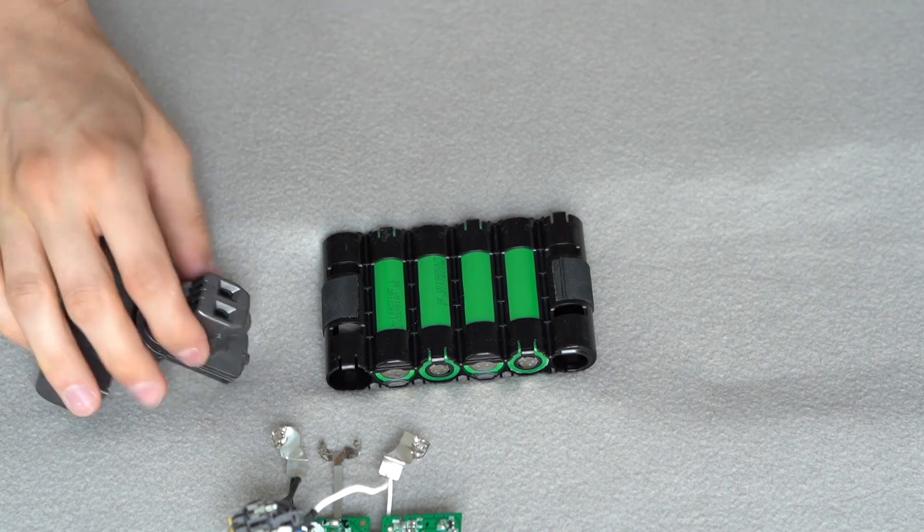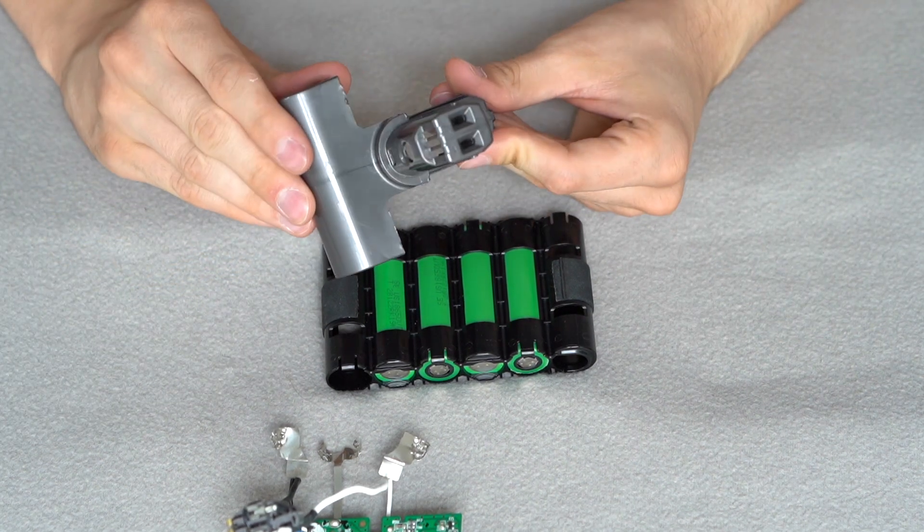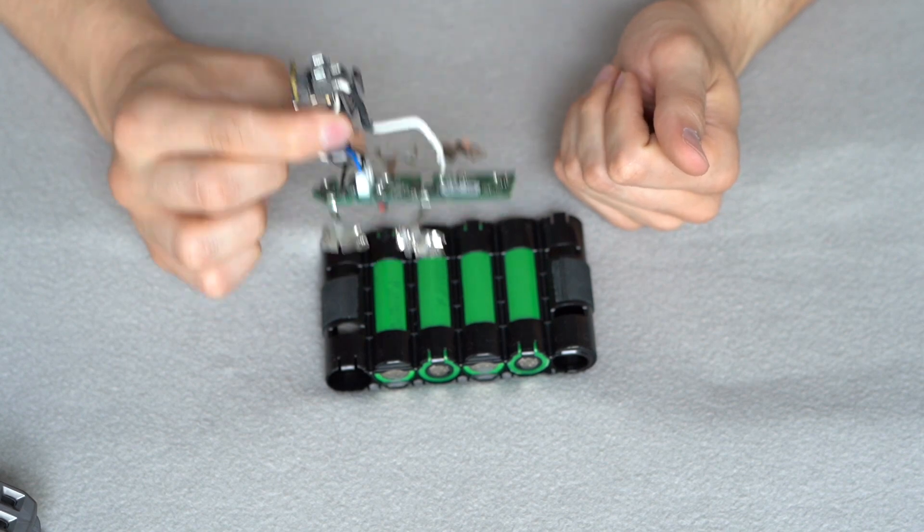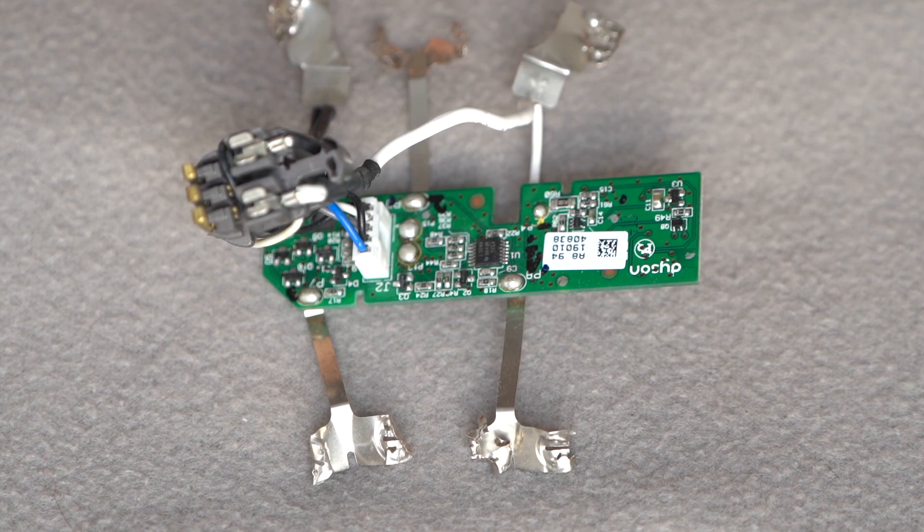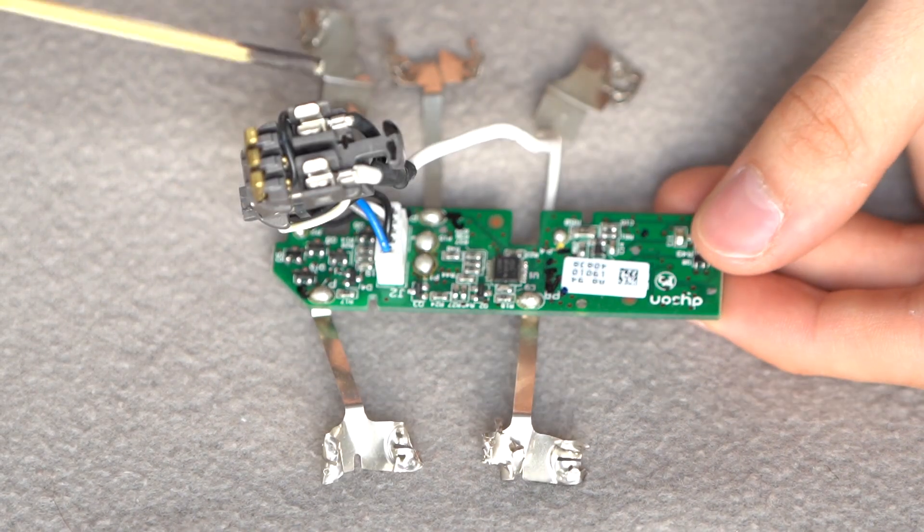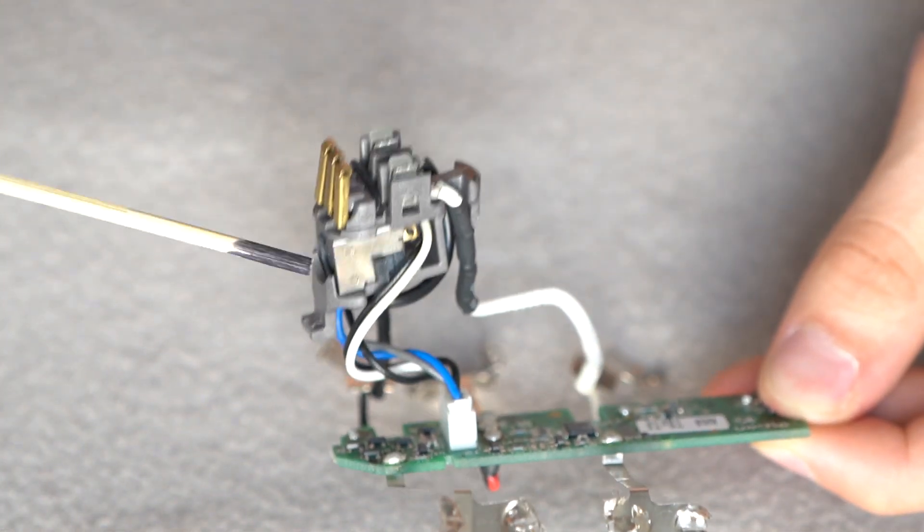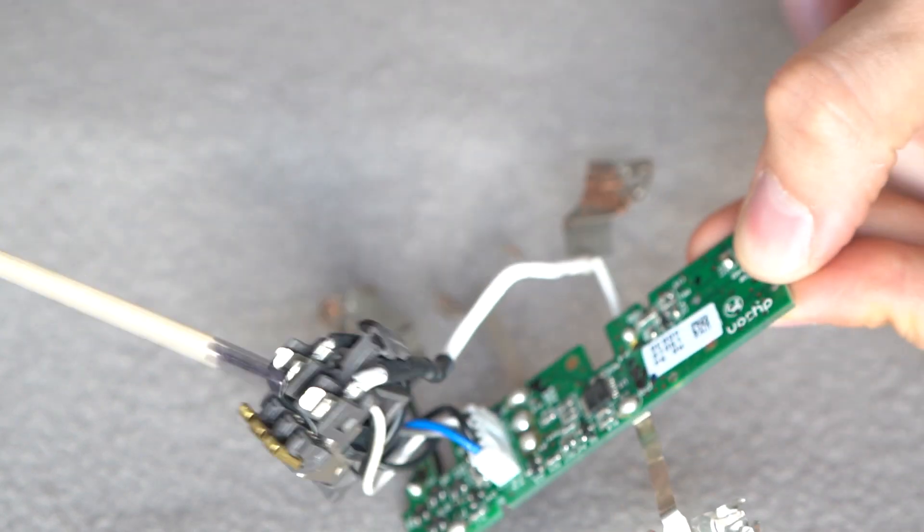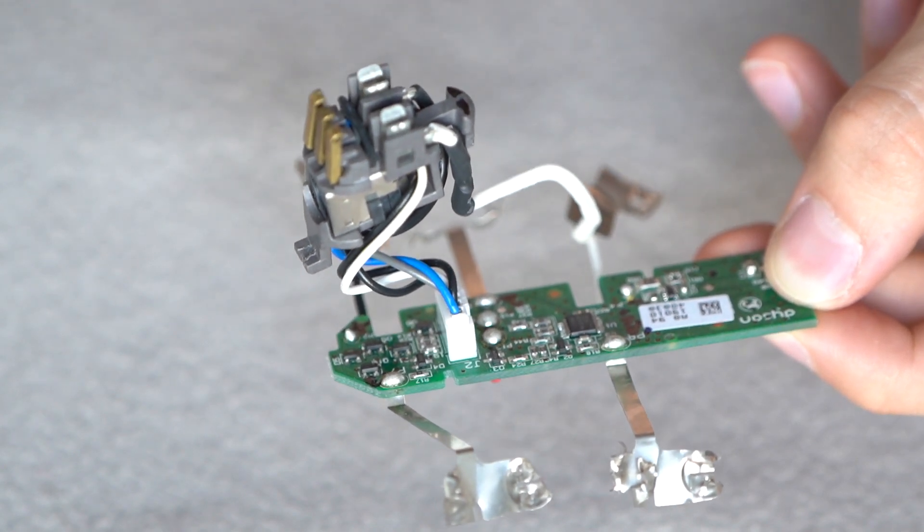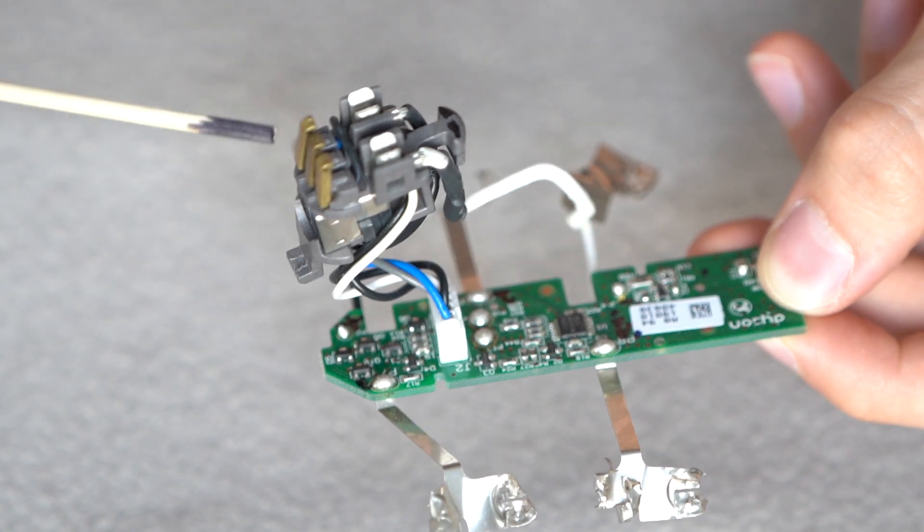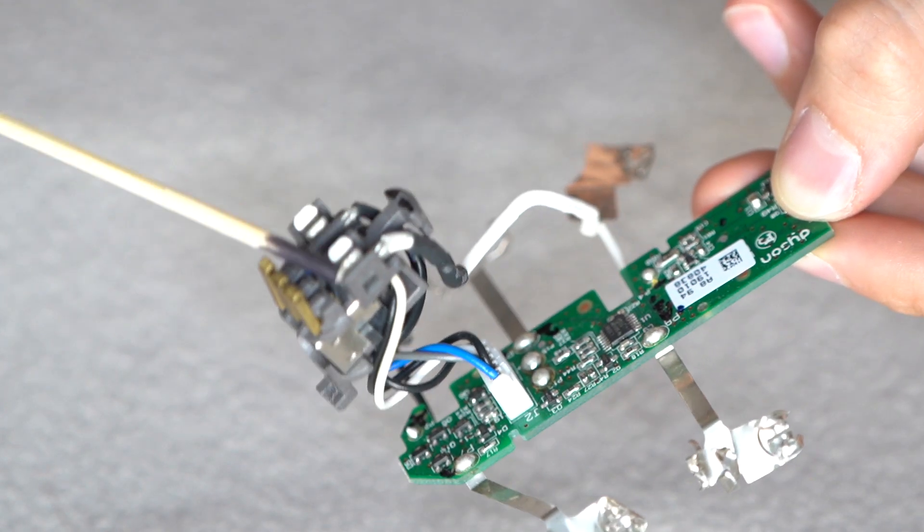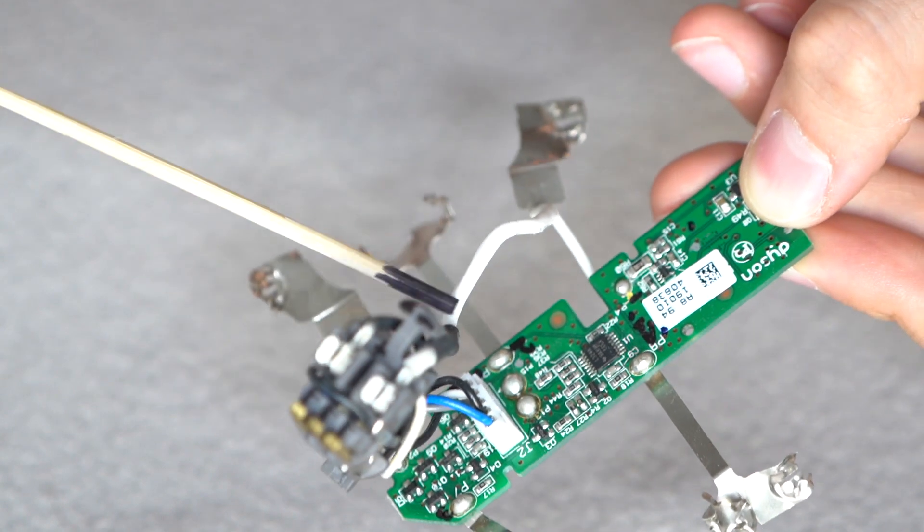We won't need this part, we will use this part for our modification and we will use this board with original connectors. So this is the part on which we are going to work now. We'll now take a closer look at the battery management system board and as you can see we are going to keep these connections because they are original connections. As you can see there are two discharge connectors and three information connections for the battery to communicate with the vacuum cleaner.